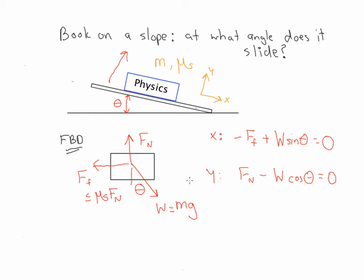That gives us some things we can work with. From our knowledge about what's going on in the y direction, we can say that the normal force F sub n is just equal to W cosine theta, or really, that's just equal to mg cosine theta. That's going to come in handy in just a minute.